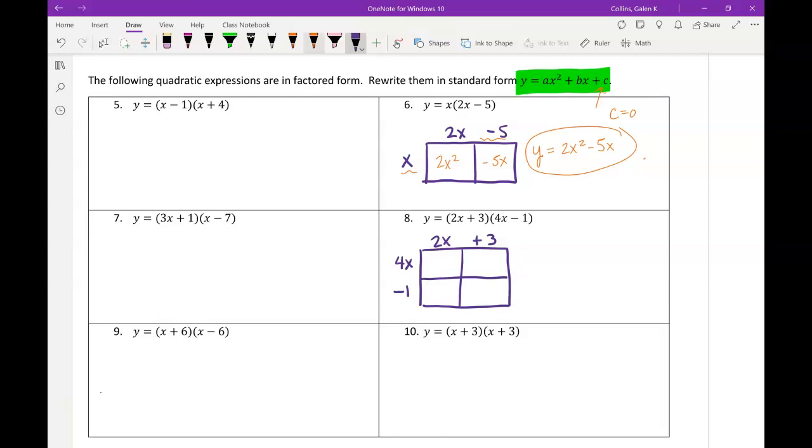But again, when we fill this out, we are just multiplying. So 2x times 4x, well 2 times 4 is 8, and x times x is x squared.